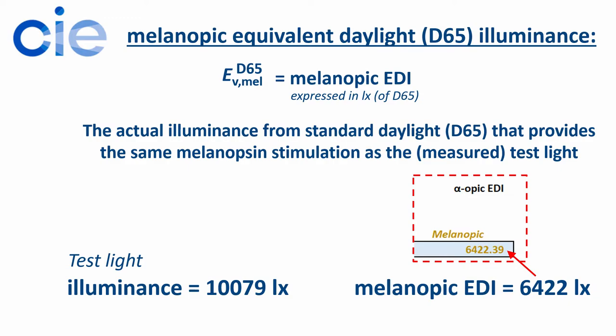So we can see what that is, and the melanopic equivalent daylight illuminance needs to be explained, and it's best explained as the actual illuminance from the daylight source that you saw in the charts earlier, that would provide the same melanopic light that is present in the measured spectrum.